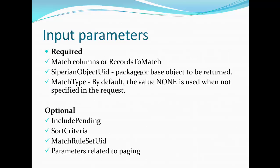The required parameters for the Search Match API are: first, match columns or records to match — specifying which match columns from the MDM Hub to use; second, the package name or base object as a separate object UID; and third, match type — ATTO, BOTH, or NONE. By default, the value is NONE when not specified in the request, meaning a dynamic match rule set will be created.